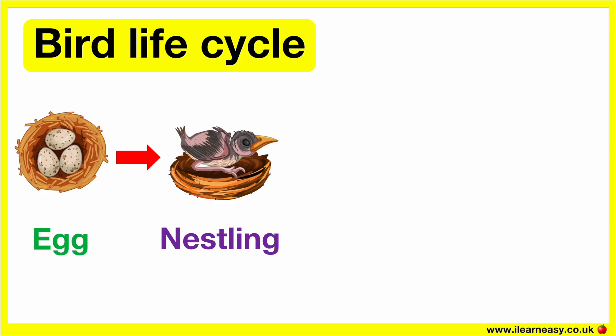At this stage, the chick is covered in soft down. After a while, the chick will develop features such as flight feathers and wing muscles. In this stage, it's known as a fledgling.